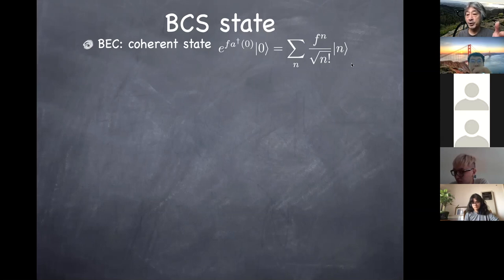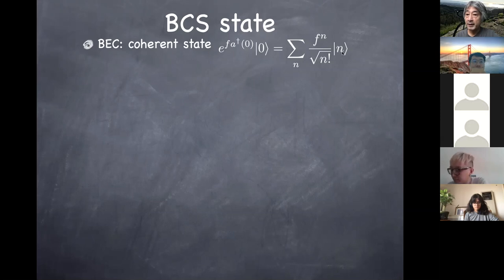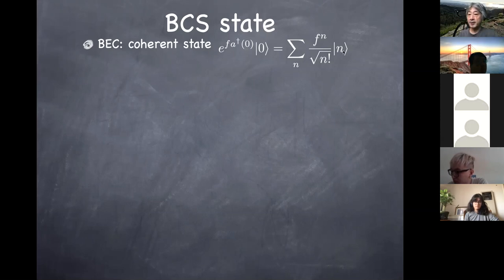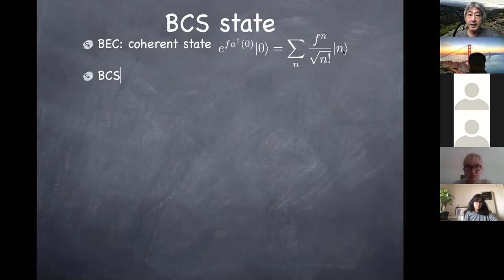It's clear that you don't have the same kind of coherent state for fermions, because you'd have a linear combination of the vacuum state and the state with one particle occupying it, but there are no further states since you can't occupy the same state with two fermions at the same time. But there is an analog of the coherent state: the BCS state.